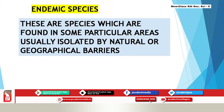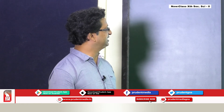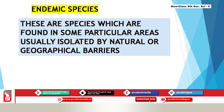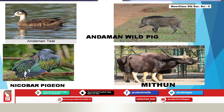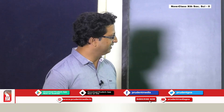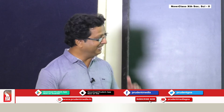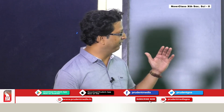Endemic species are those which are found only in a particular or specific area, usually isolated by a geographical or natural barrier. Examples include the Andaman wild pig, Nicobar pigeon, and Mithun, which is found in Arunachal Pradesh.